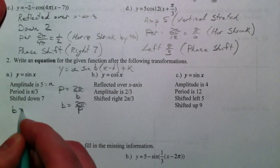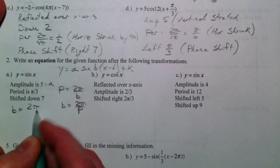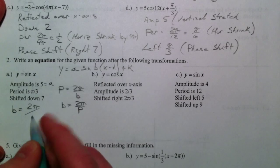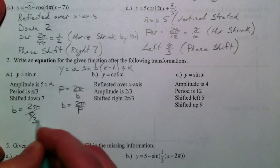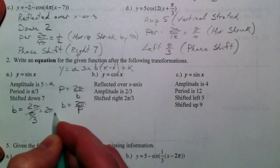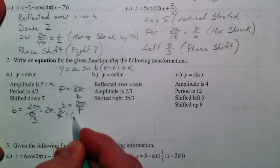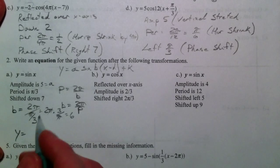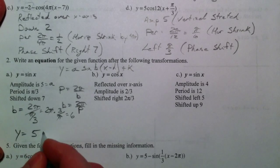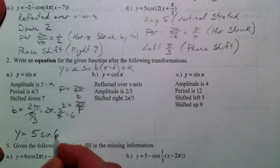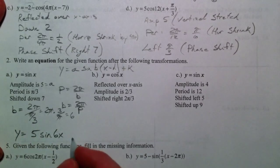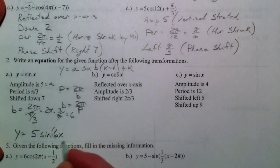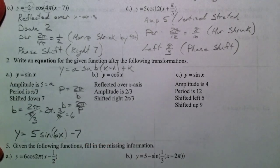So b equals 2 pi divided by pi over 3. Dividing by pi over 3 is the same thing as multiplying by 3 over pi. Pi's cancel out, you get 6. So y equals our 5 times the sine of 6x. And then down 7. So on the outside, I'm going to have a minus 7.